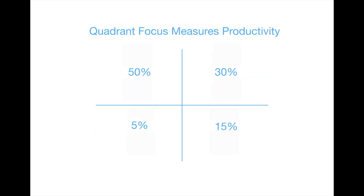So how does Priority Matrix measure productivity? Well, in Priority Matrix, we have a quadrant focus view, and this shows you what percentage of time you spend in quadrants one, two, three, and four.